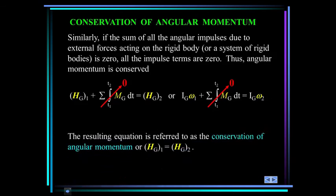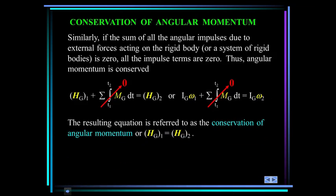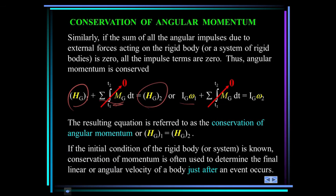Finally, conservation of angular momentum. If there are no external moments acting on the body, that term goes to zero, so the angular momentum at state one equals the angular momentum at state two. Remember, angular momentum is I about G times omega. That's it — see you in cyberspace.